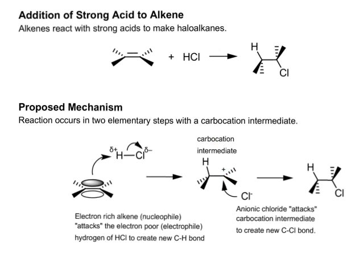This is a carbocation intermediate with a charge on it. Things floating around in a system with charge are going to tend to be fairly reactive. I have a positive charge on my carbon-based system, and thanks to the HCl bond being broken and the electrons shoved over to the chlorine, I now have a chloride floating around. This anionic chloride is going to attack, with its extra electron density, the C-plus carbocation of the alkene to make a new carbon-chlorine bond.